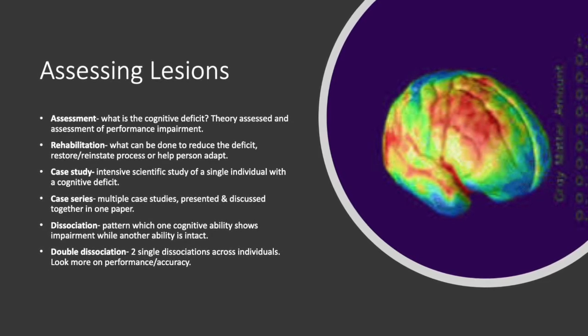Through double dissociations, we can pinpoint which part of the brain went wrong. This approach focuses on the performance and accuracy of cognitive ability tasks.